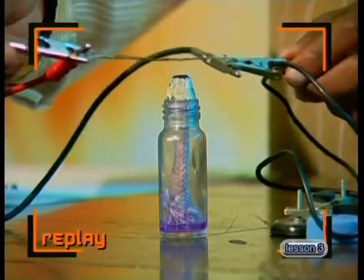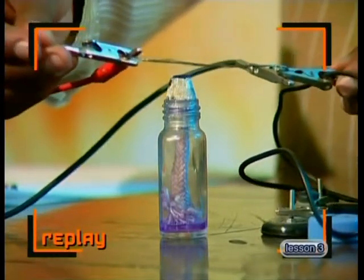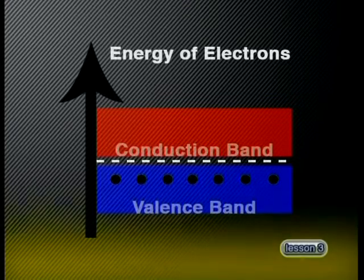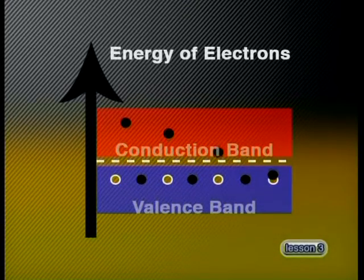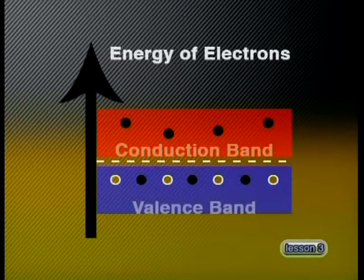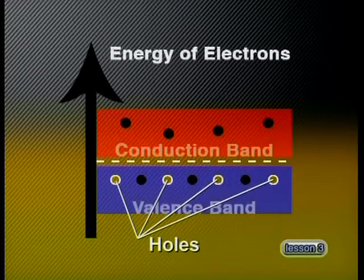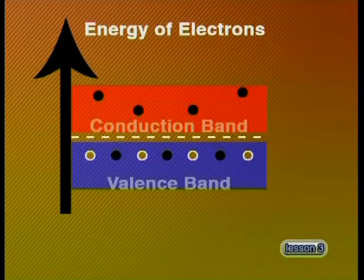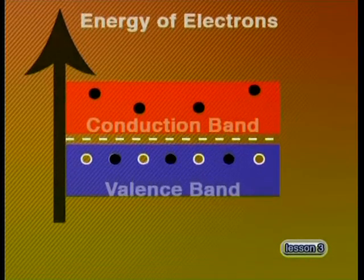But when the silicon was heated by the spirit burner, the electrons in the valence band gained enough energy to move into the conduction band. However, these excited electrons left behind a region that is now positively charged in the valence band. These positive regions are called holes. When a potential difference is applied to the ends of the semiconductor, the electrons in the conduction band move towards the positive terminal of the battery.